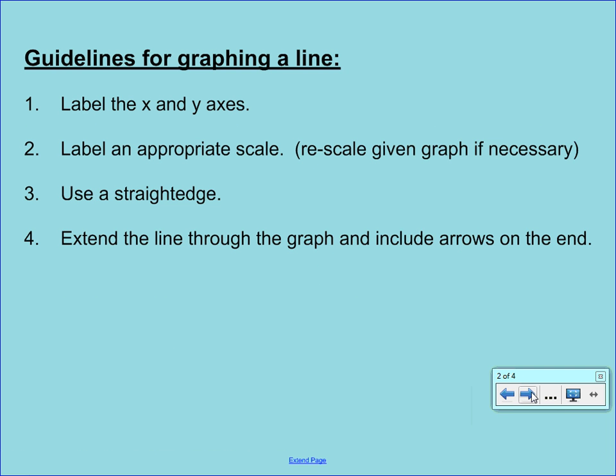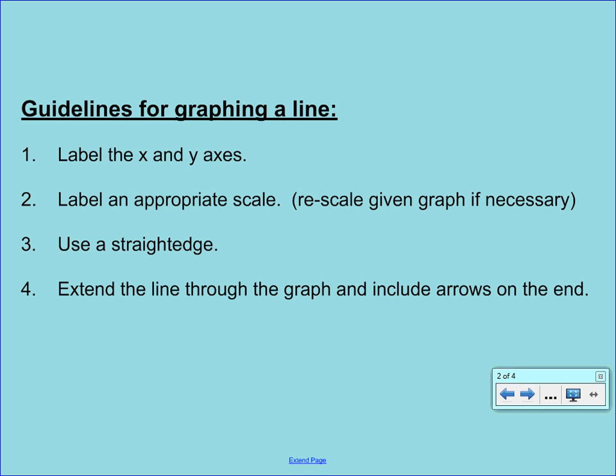When we graph lines, there are a couple of guidelines. You want to start by labeling the x and y axes. X is always the horizontal, Y is always the vertical. Second, you want to make sure that a scale is labeled. Sometimes the numbers will be in there, sometimes they're not. If nothing is labeled, we usually assume that the scale goes up by one. Sometimes we won't have enough room to go up by one, so you may have to rescale and go by twos, fives, or tens.